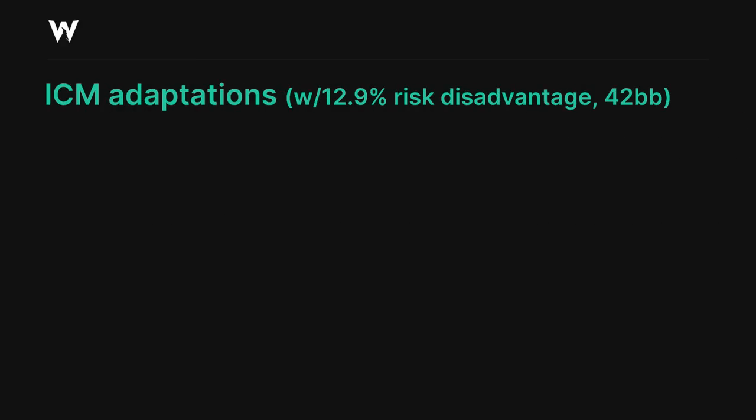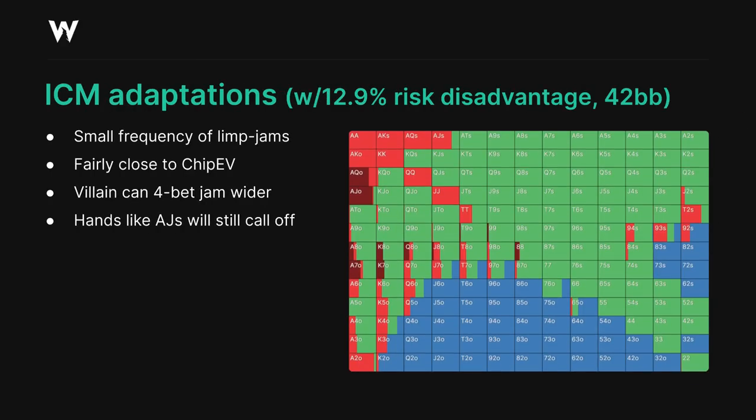If the big blind has a big risk disadvantage, versus a small blind who's open raising a very wide range, then some of the same trends are visible, like the jams creeping in a little more readily even at 42 big blinds, while the value range stays relatively consistent. The small blind is more able to 4-bet jam with a wider range, so hands like ace-jack suited are still strong enough to be willing to get it in here. The 3-bet bluffing range is not that far away from chip EV here, because the impact of the small blind being able to raise a wider range preflop and then 4-bet jam a wider range as well is enough to offset the risk premium imposed on the big blind to some degree. So this concludes our fairly comprehensive preflop analysis, let's move on to a brief overview of how some of the most important flop nodes operate.